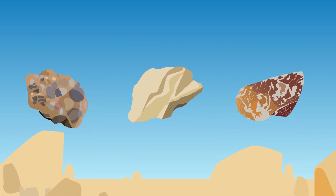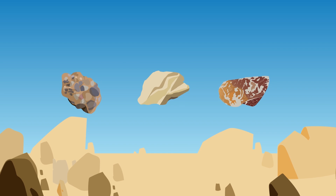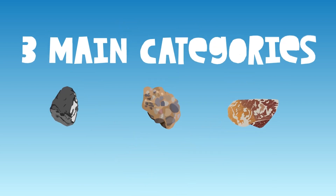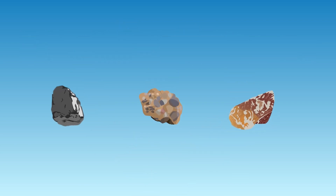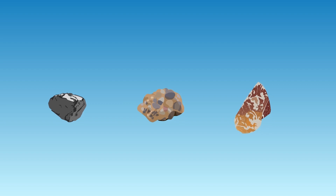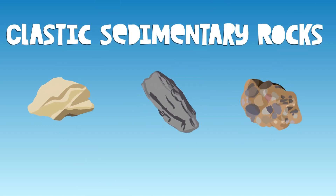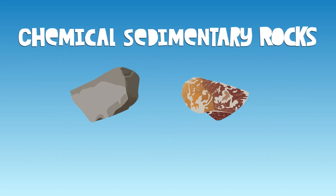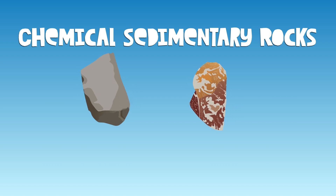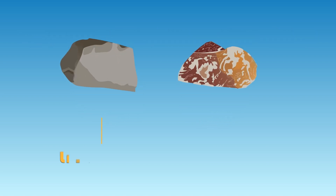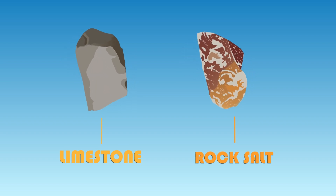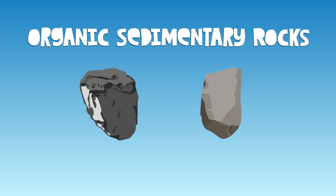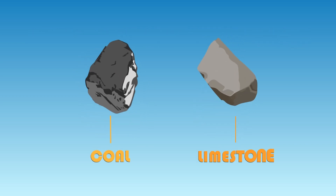Sedimentary rocks can be put into three main categories. Clastic sedimentary rocks consist of sandstone, shale, and conglomerate. Chemical sedimentary rocks consist of limestone and rock salt. Organic sedimentary rocks include coal and some types of limestone.